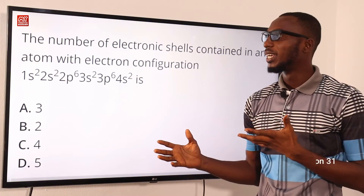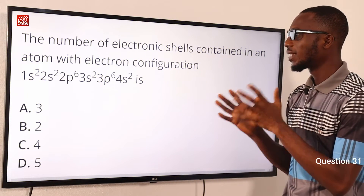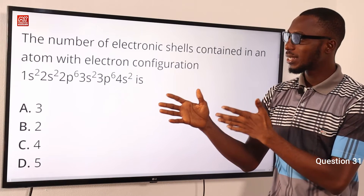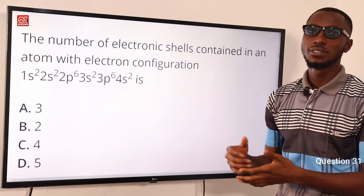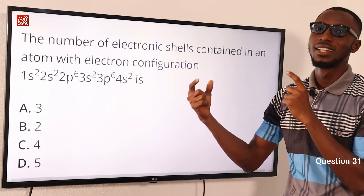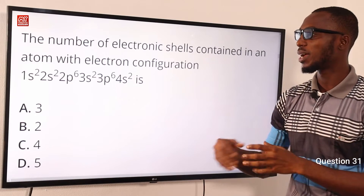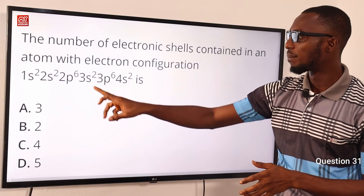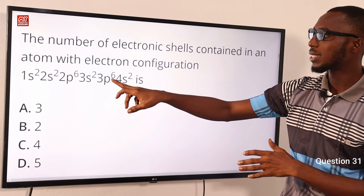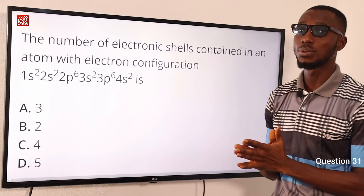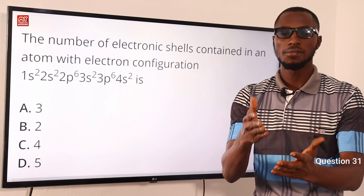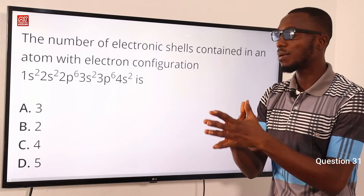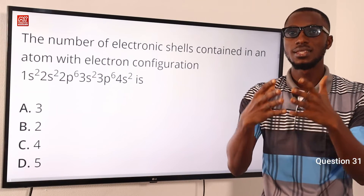Question 31. The number of electronic shells contained in an atom with electron configuration 1s², 2s², 2p⁶, 3s², 3p⁶, 4s² is what? First, let's add up the superscript numbers: 2+2=4, plus 6=10, plus 2=12, plus 6=18, plus 2=20. So the element has atomic number 20 — that is calcium. For the s orbital, it can only contain 2 electrons; the p orbital contains 6 electrons.